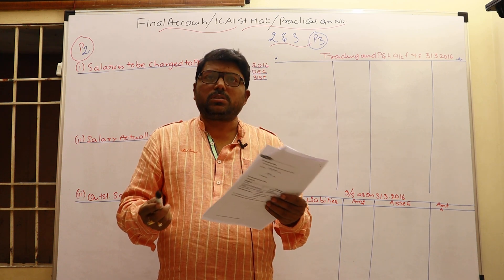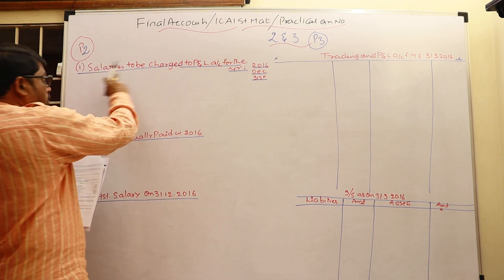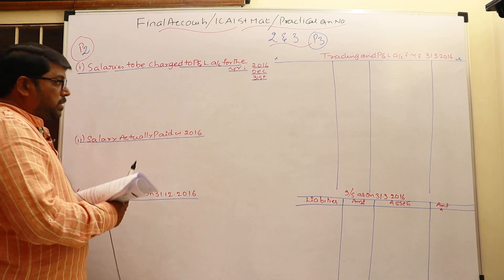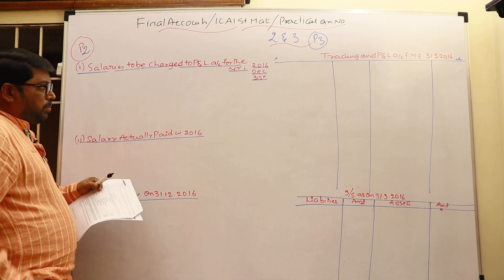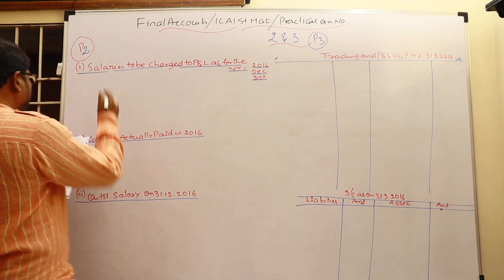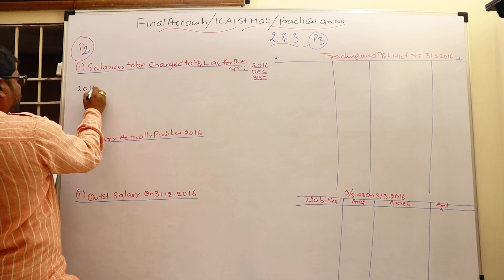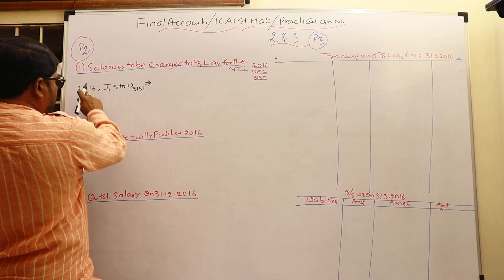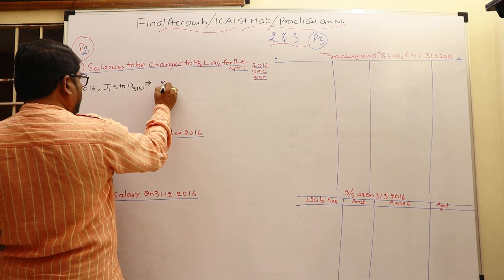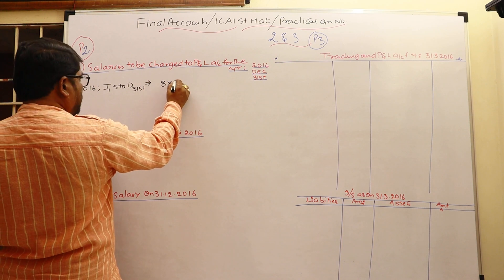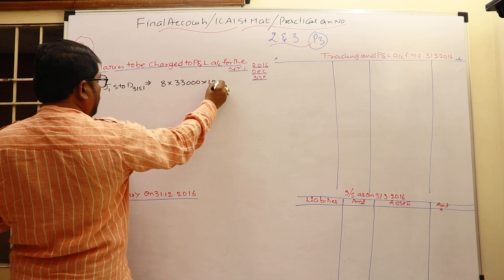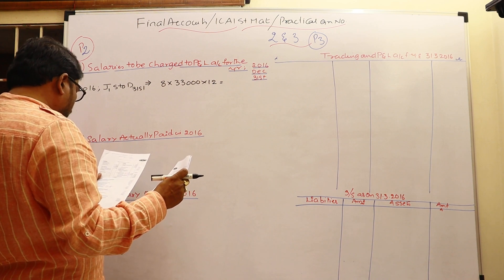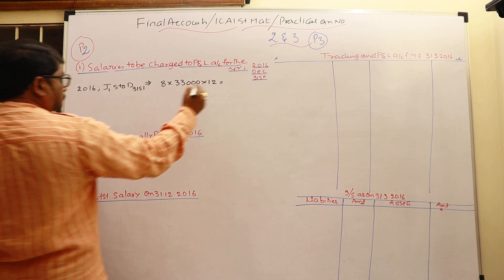The second point is the amount actually paid during 2016, and the third point is the outstanding salary. For the first point — salary to be charged to P&L for the year ended December 31st 2016 — from January 1st to December 31st there are 12 months. There are 8 employees, each paid ₹33,000 per month for 12 months. That gives 8 × 12 × 33,000 = ₹31,68,000.